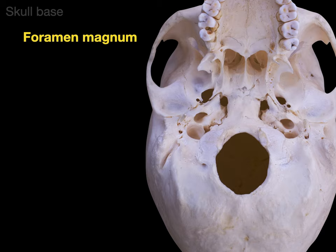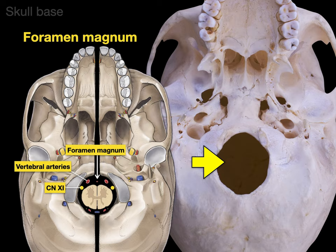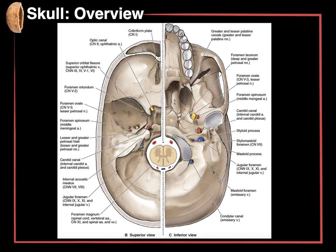The foramen magnum — foramen for opening, magnum for huge. It's traversed by the vertebral arteries, which supply the posterior part of the brain; the spinal accessory nerve, which innervates the trapezius and sternocleidomastoid — it goes through the foramen magnum and back down through the jugular foramen, which is a cool course. And most importantly, the spinal cord traverses the foramen magnum. And that, my friends, is an overview of the skull in a nutshell.